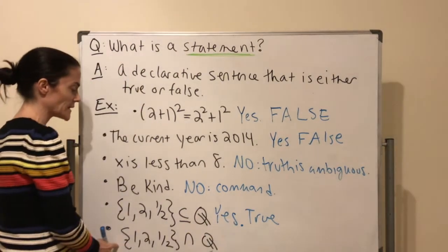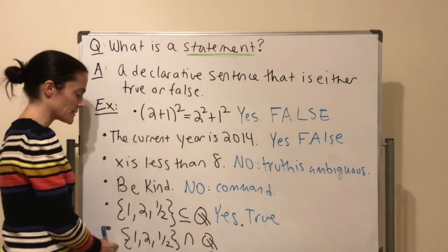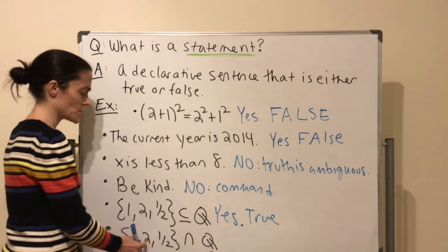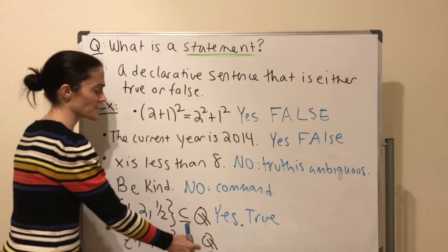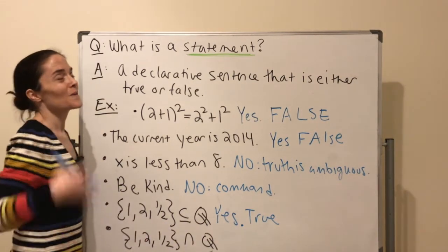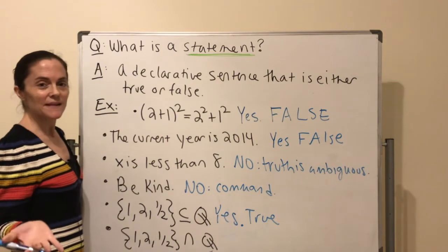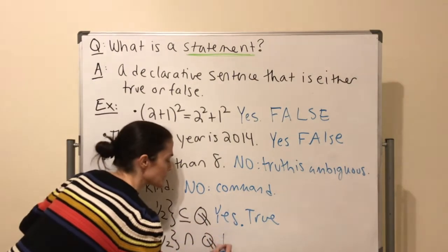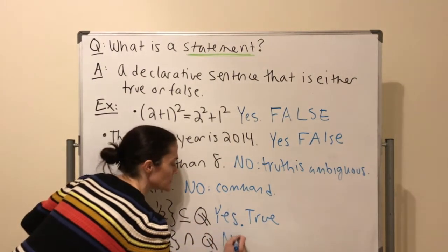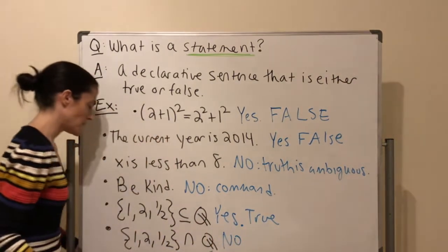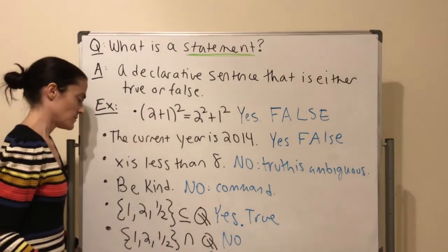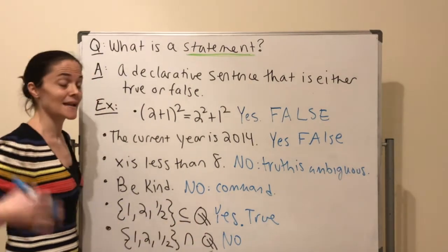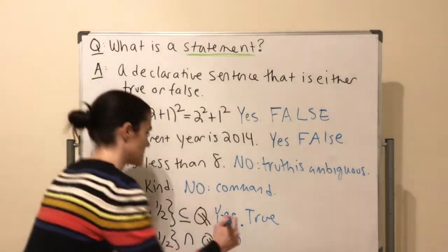Finally: {1, 2, ½} ∩ ℚ — just writing this intersection alone is not a statement. It's just a set, not a sentence declaring anything true or false.